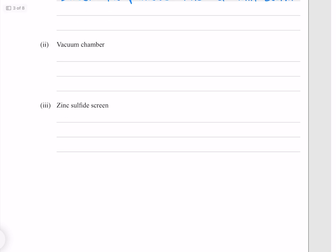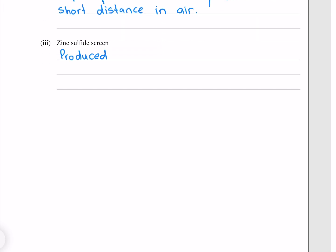The vacuum chamber. This is because alpha particles can only travel a short distance in air. And the zinc sulfide screen produced flashes of light when struck by a particle.